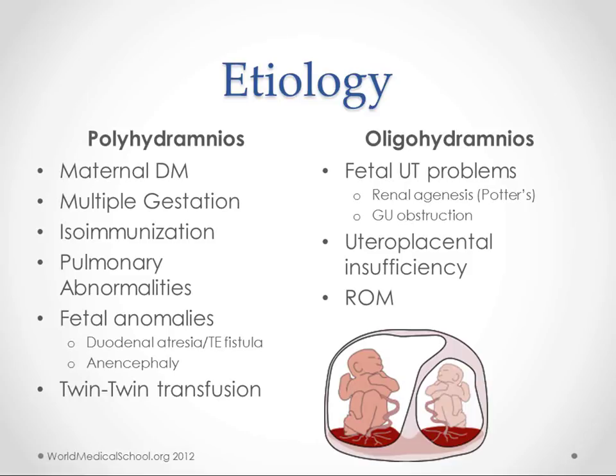There's also maternal diabetes, though the exact mechanism isn't entirely clear. Rupture of membranes is another cause — it can be a normal reason for oligohydramnios, but if it happens too early, that's not a good thing.